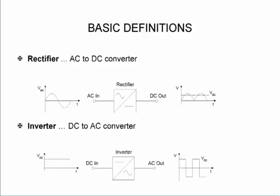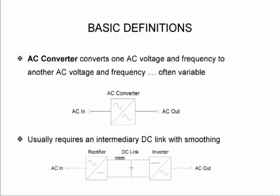Starting off by looking at a rectifier, so that takes AC and converts it into DC. An inverter on the other hand takes DC and converts it into AC. We use this in both switch mode power supplies and variable speed drives.